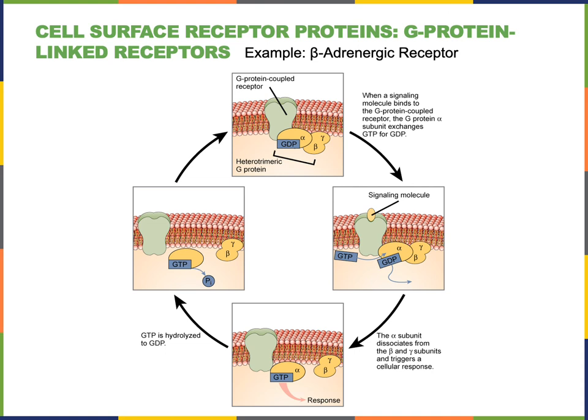The activated G protein can then stimulate an intracellular signal to regulate a cellular response, such as activating the enzyme adenylyl cyclase. Then the GTP in the alpha subunit will be broken down by hydrolysis to form GDP and inorganic phosphate, which will inactivate the G protein. The alpha, beta, and gamma subunits will then join back together with the receptor, and the receptor can now be activated again when the ligand binds to the extracellular domain.